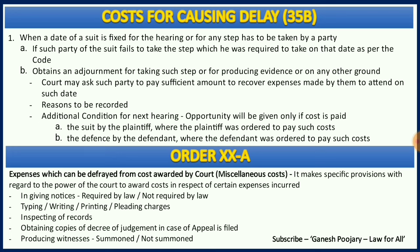The last part under this provision is Order 20A, which covers five important types of miscellaneous costs that can be recovered by the court when they go along with Sections 35, 35A, and 35B. First, costs of notices required by law — or even those not required by law — can be recovered. Second, costs spent towards typing, writing, printing, and pleading charges can also be recovered. Third, costs spent towards inspecting records can be recovered. Fourth, costs spent towards obtaining copies of decrees or judgments where an appeal is filed can also be recovered. Finally, costs spent towards producing witnesses — whether summoned or not — can also be recovered, provided they go along with Sections 35, 35A, and 35B.